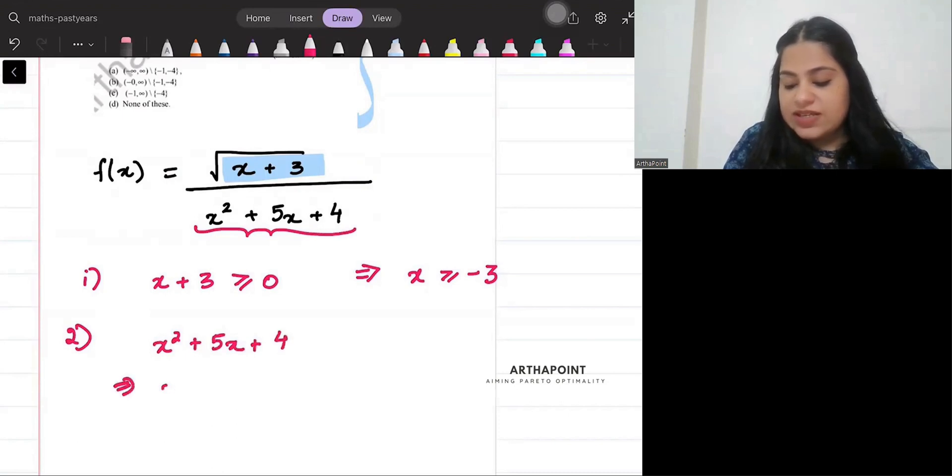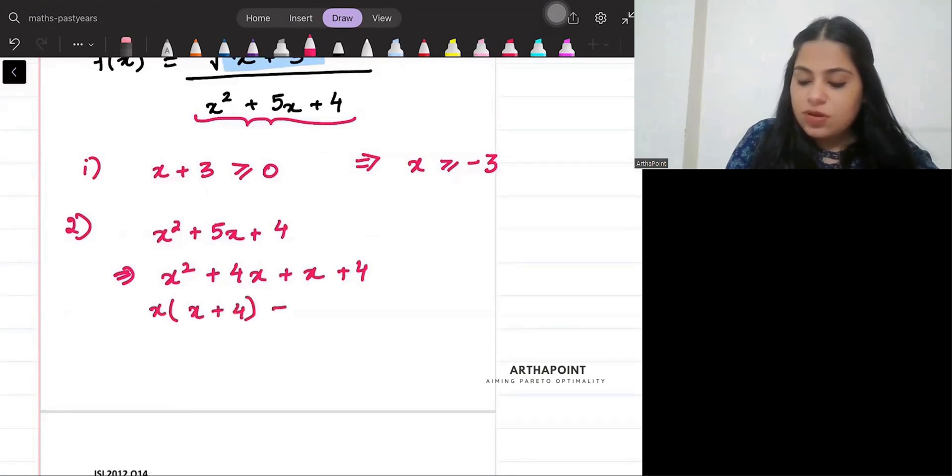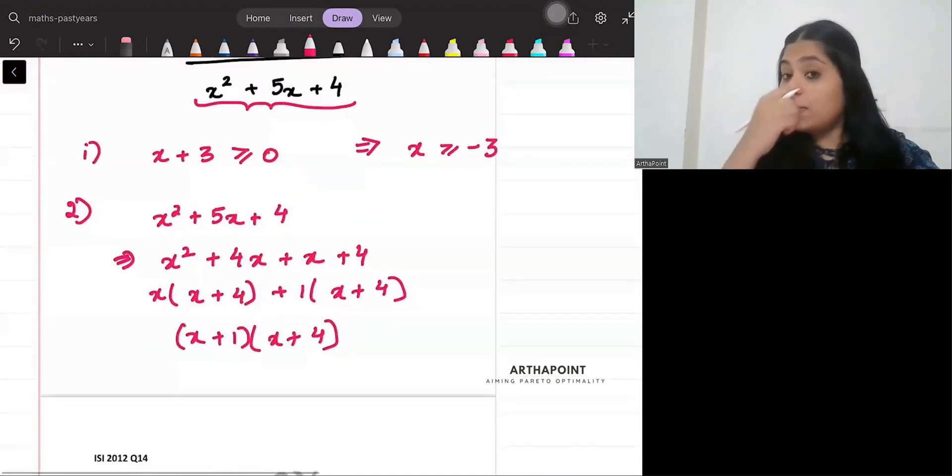Second, let us try to make factors of this. So x squared plus 5x plus 4, I can rewrite this as x squared plus 4x plus x plus 4. So I can write this as x times x plus 4 plus 1 times x plus 4. So this will be x plus 1 times x plus 4.